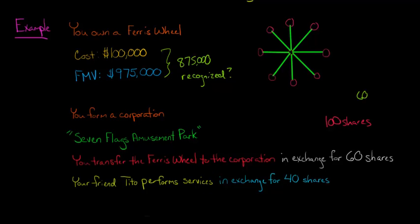So we say, okay, well you get 60 shares out of 100, that's 60%. So after this transaction, you do not have 80% of the vote and value of the corporation. So you would be taxed on an $875,000 gain. You would be taxed when you transfer this Ferris wheel to the corporation and you say, hey, that's a lot of money. That's a big tax bill I'm going to get. Is there something I can do?